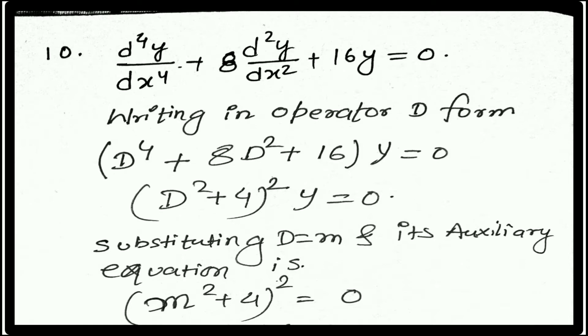d⁴y/dx⁴ + 8d²y/dx² + 16y = 0. First we are writing in operator D form. What happens is (D⁴ + 8D² + 16)y = 0.